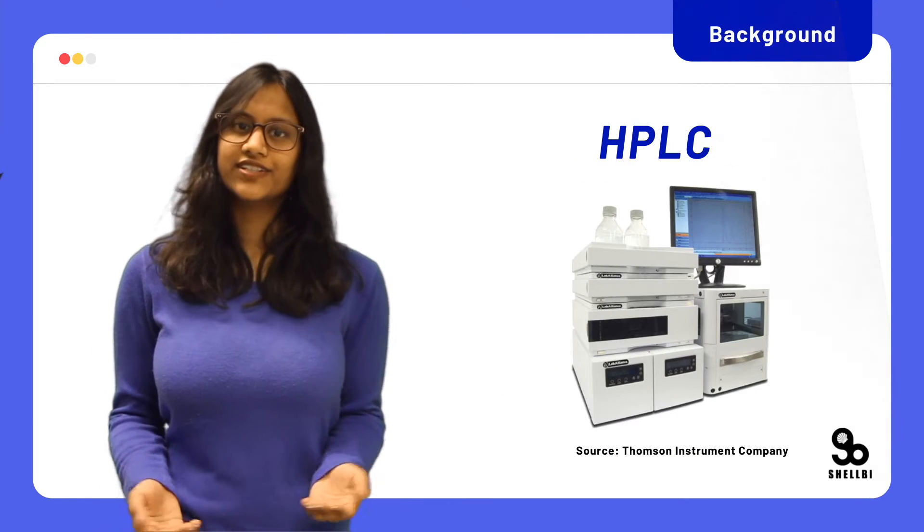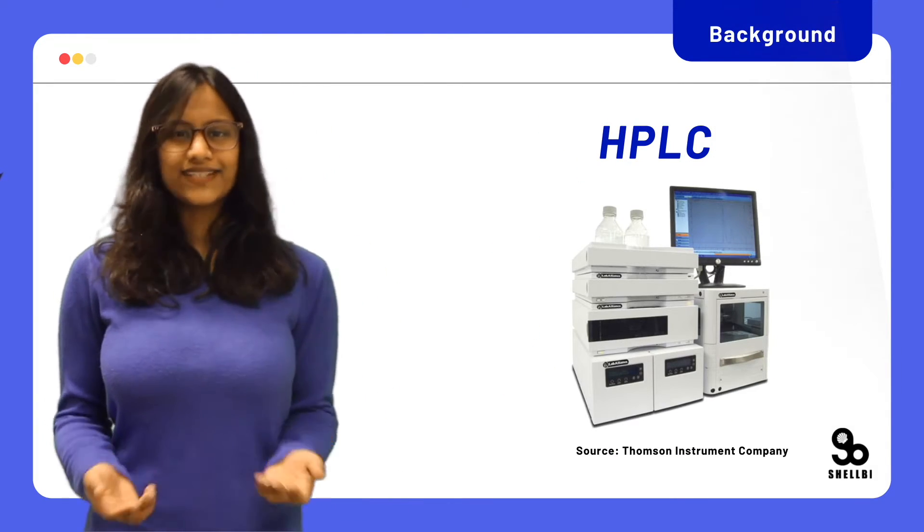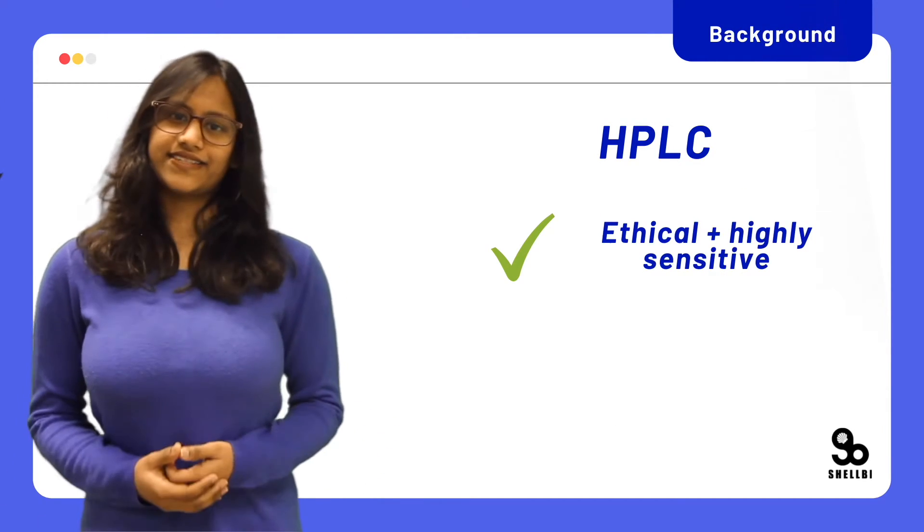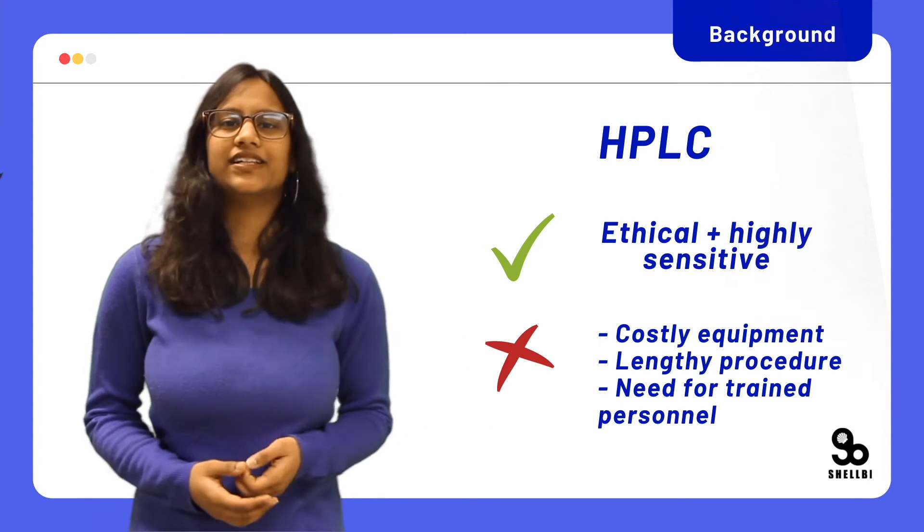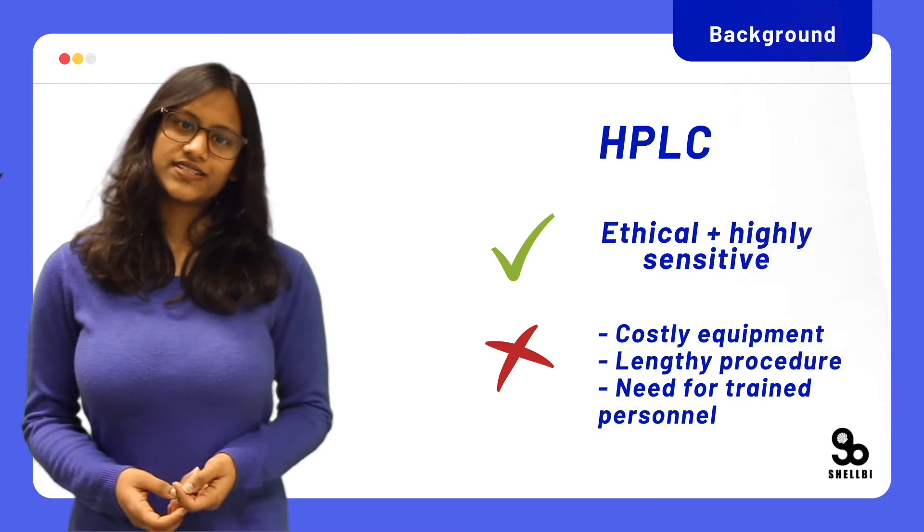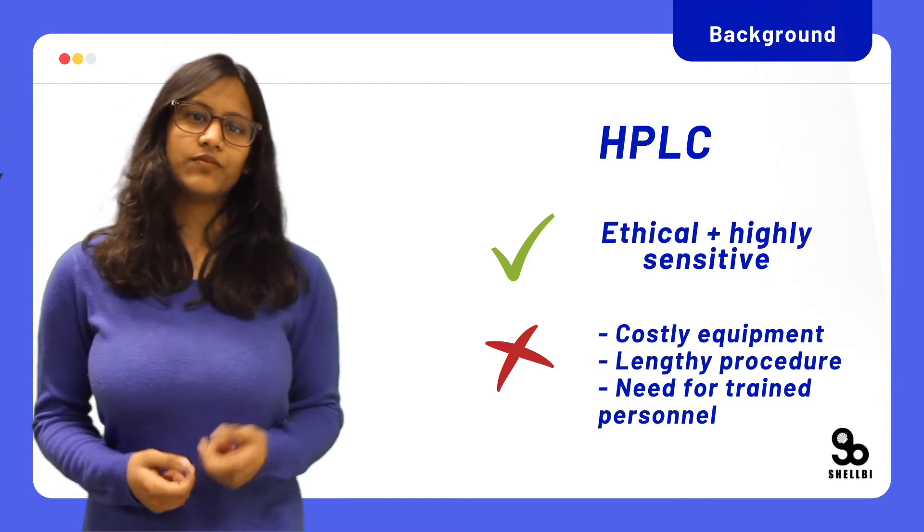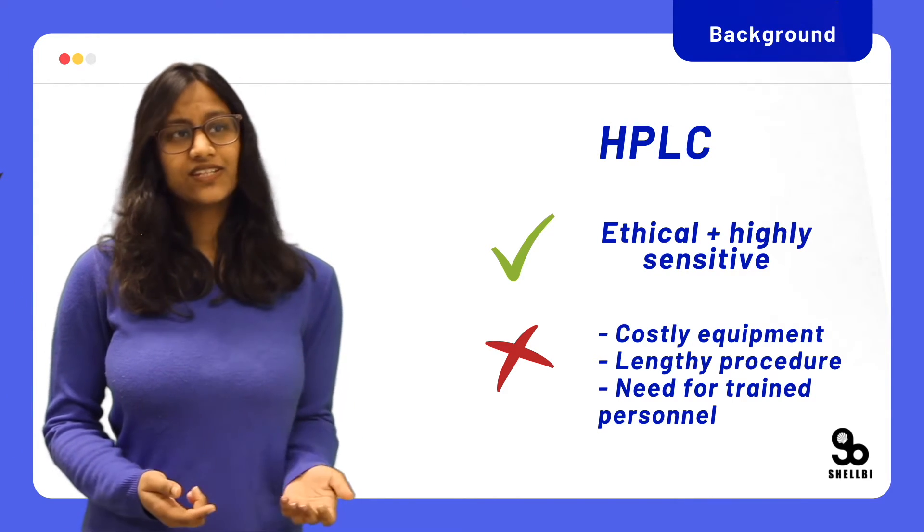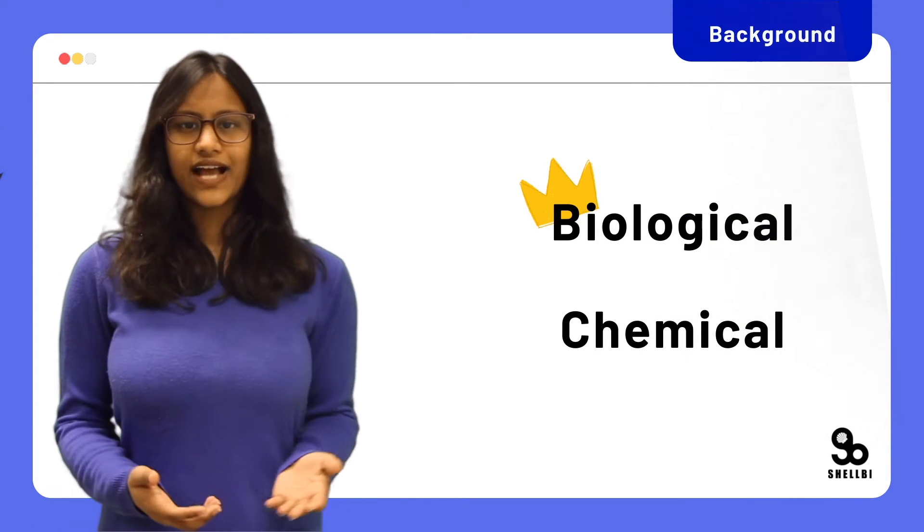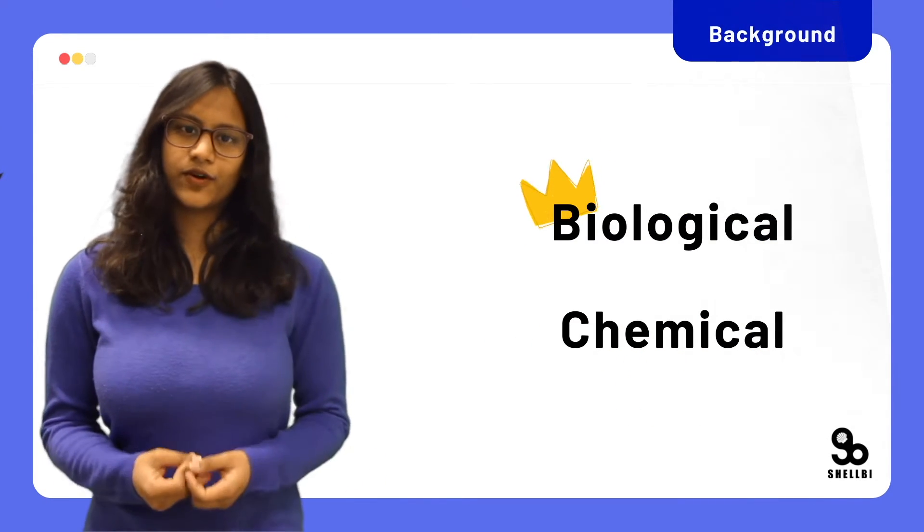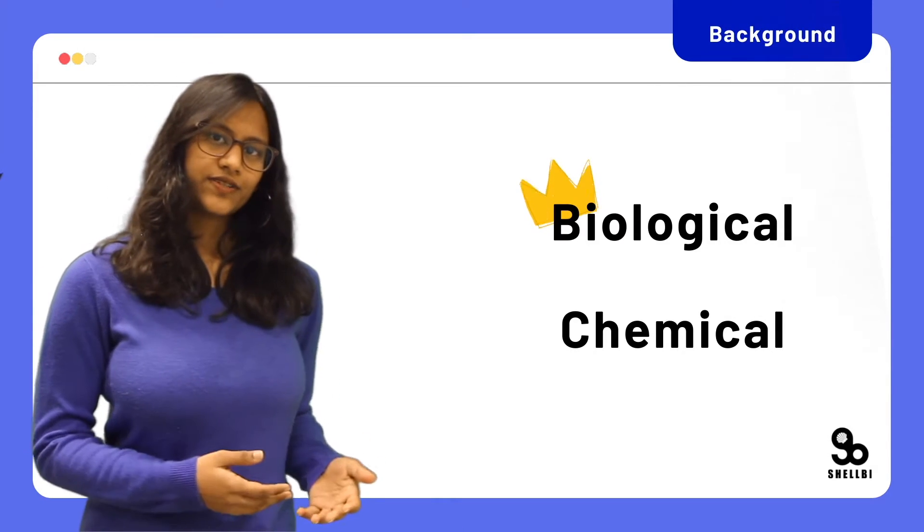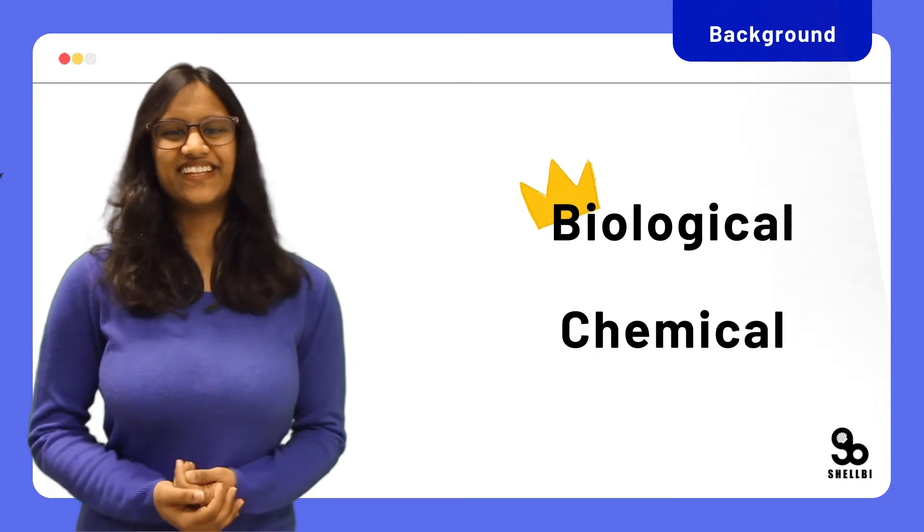The other solution is HPLC, a chemical way of testing for PSP. It is ethical and highly sensitive, but the cost of the high-end analytical equipment, lengthy procedures, and the need for qualified personnel hinders their acceptance in routine monitoring laboratories, especially those in developing countries. Moreover, a biological assay is a rather preferred method for testing, since it can illustrate the direct response of an organism to the food it ingests.